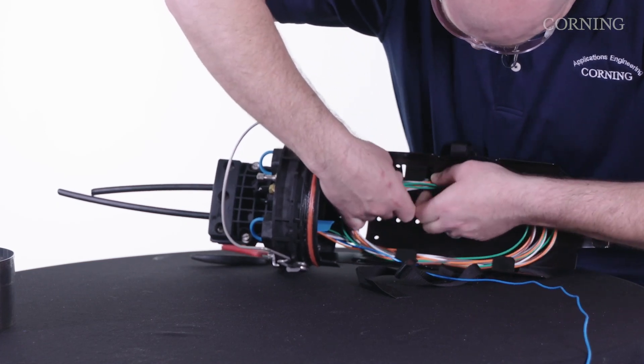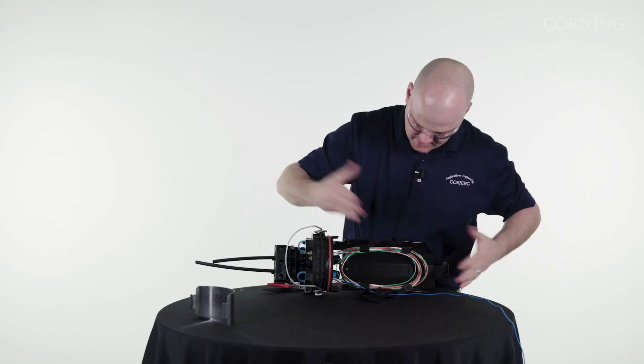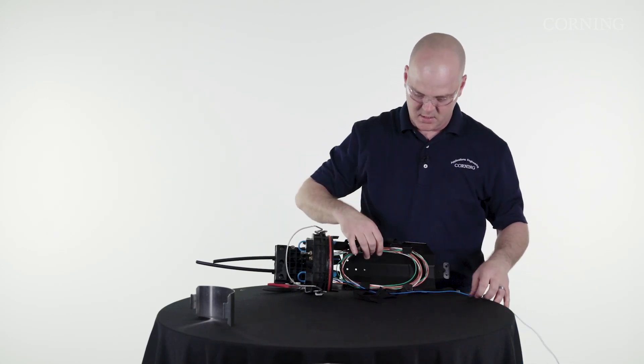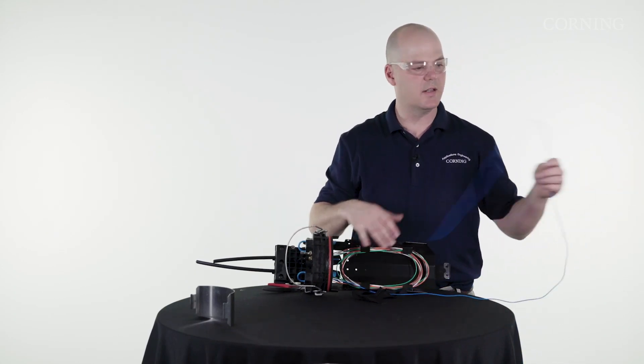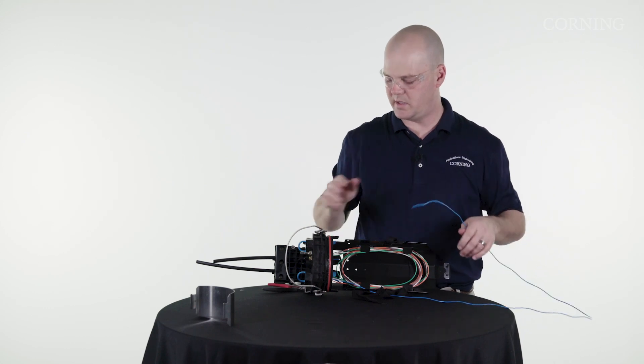Once again, be sure not to kink your buffer tubes, and that's your slack sitting there. Now we're going to put a tray on here, access this, and then we're going to put a single e-cam in there.